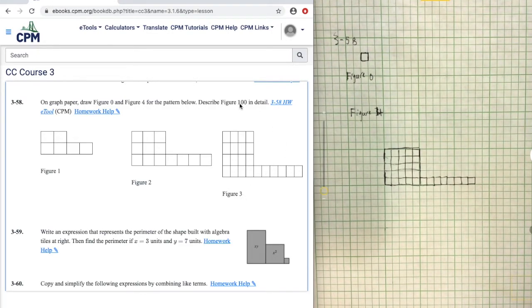So for figure 100, you'd expect 200 tiles coming off as a little tail. So again, that's going to be way too big to draw. But you could describe it as a square of 101 by 101 tiles, with 200 tiles coming off as a little tail.